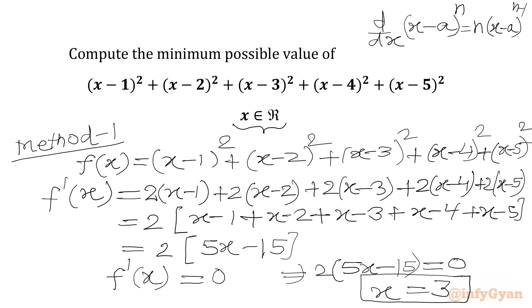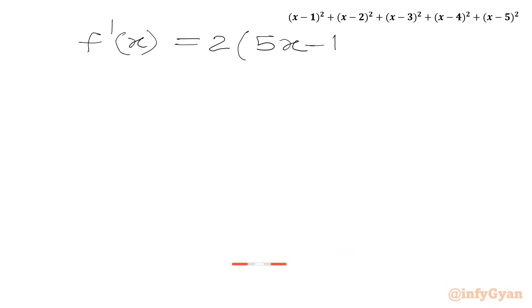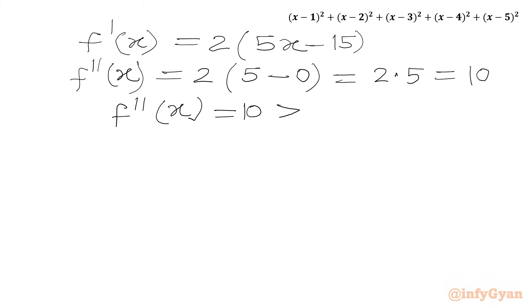Now we will check whether we are getting a minimum or maximum at x = 3. We will find the second derivative. f'(x) = 2(5x - 15), so f''(x) = 2 times 5, which equals 10. Since f''(x) = 10 is a positive number, at x = 3 we get a minimum.